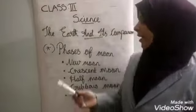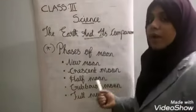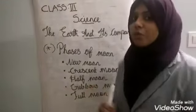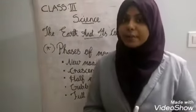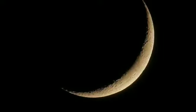Second one, crescent moon. Look at the picture. Two or three days after new moon, we can see some part of the moon. It is called crescent moon.